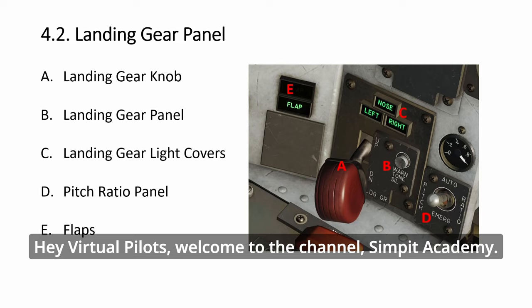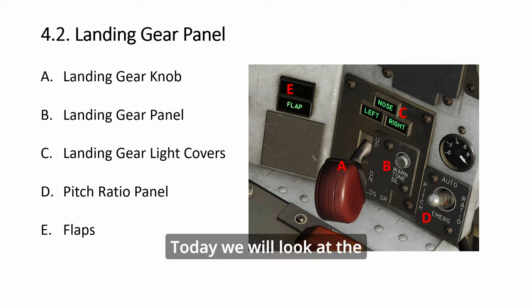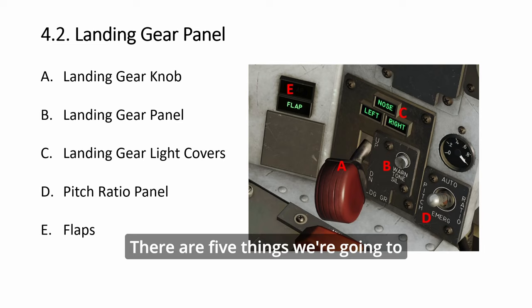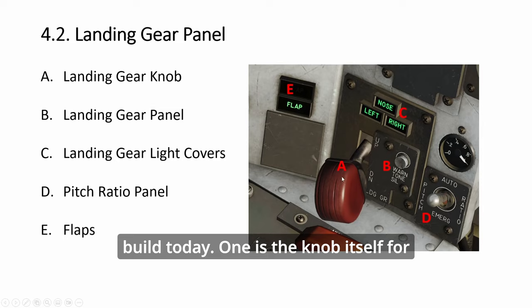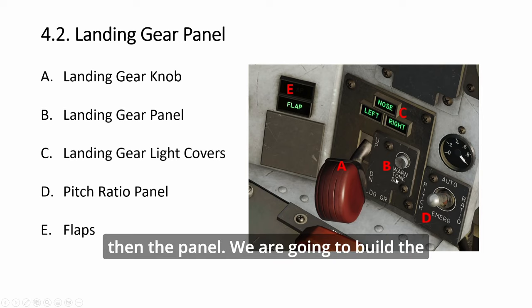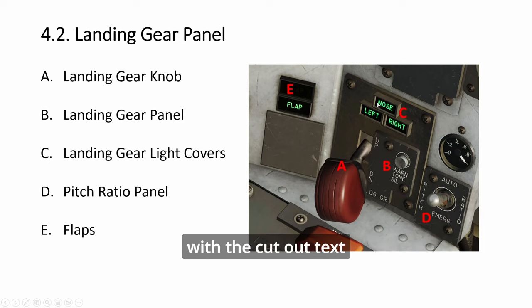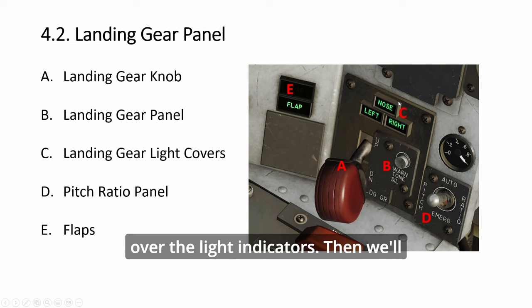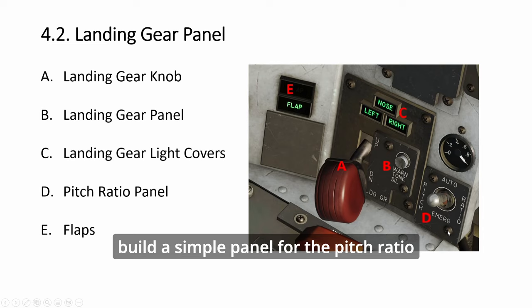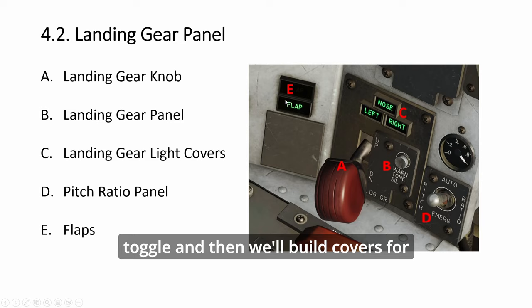Hey virtual pilots, welcome to the channel Simpid Academy. Today we will look at the landing gear panel section. There are five things we're going to build: the knob itself for the landing gear, the panel, the light indicator covers, cutout text over the light indicators, a simple panel for the pitch ratio toggle, and covers for the flaps light indicators.